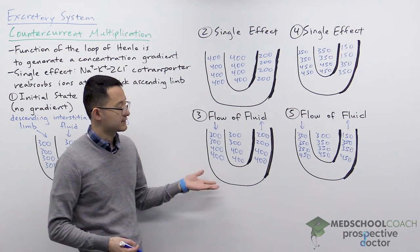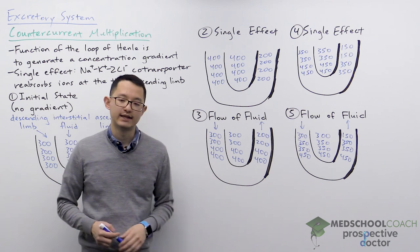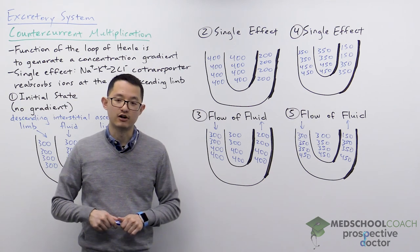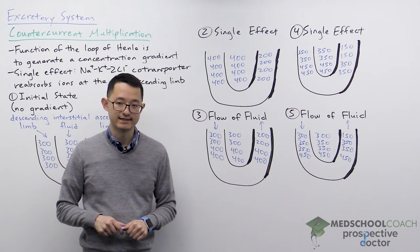So this is essentially how the loop of Henle generates the concentration gradient in the kidneys.